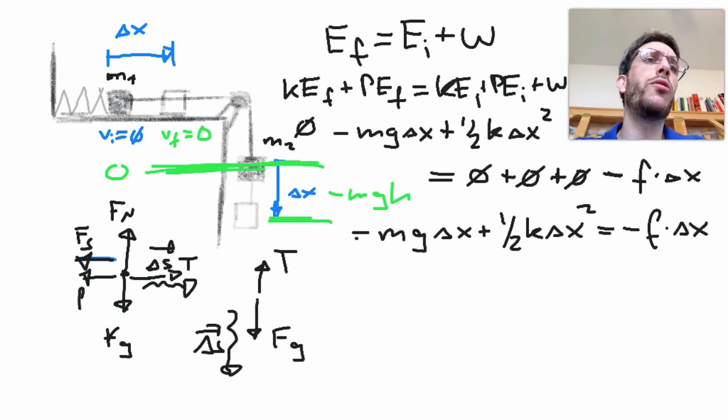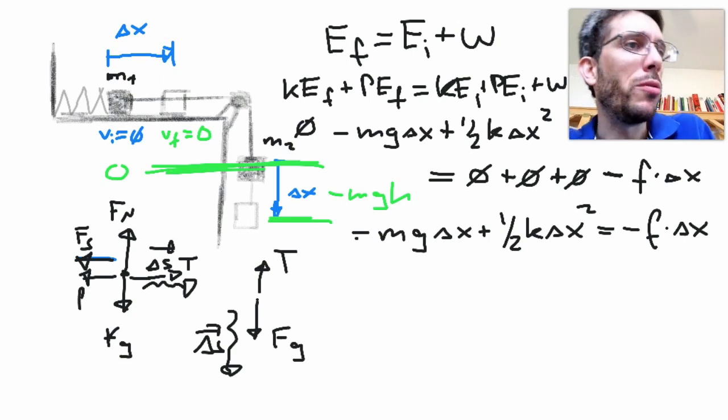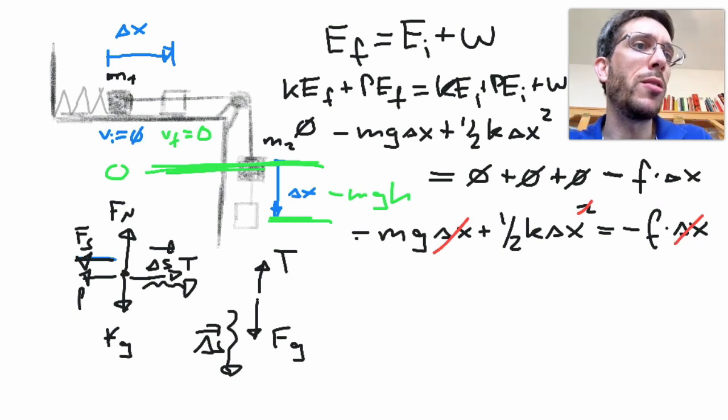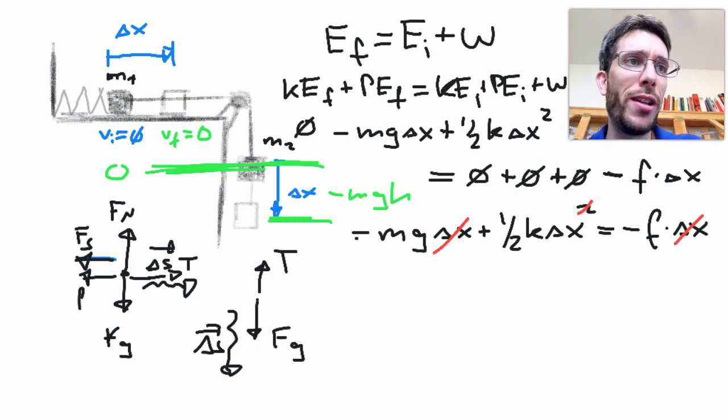Now I want to solve for delta x, and according to math there are two solutions. One of the solutions being the one where delta x is zero. And we know that's the initial position, so that's definitely for physics not a solution. So what I'm going to do here, I'm going to divide by delta x, as I know that delta x equals zero cannot be my final answer. That was my initial answer, or my initial condition.